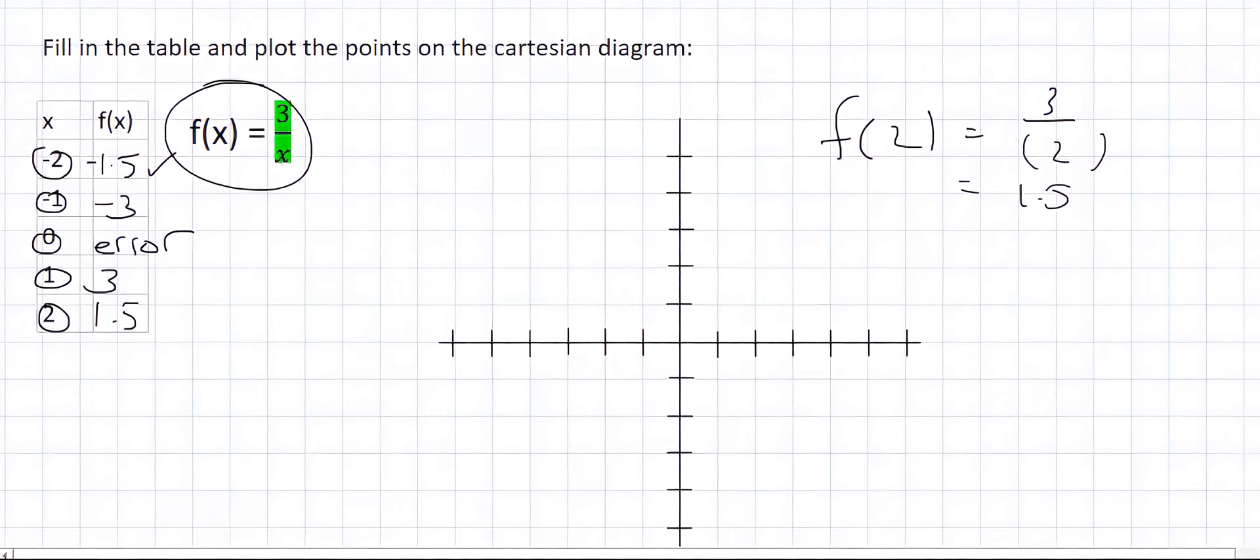Now we can go and plot the points. The first one we're going to plot is this over here, which is negative 2. So negative 2 is the x, and then minus 1.5 is the y. That's 1 down and then a half, so that's there.